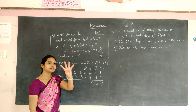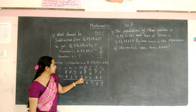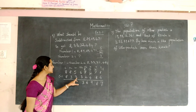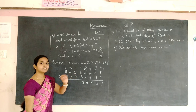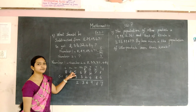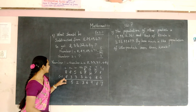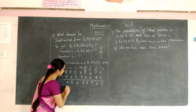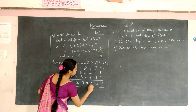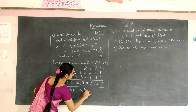Start counting from 2 until you reach 8: 3, 4, 5, 6, 7, 8 — number got is 6. Start counting from 3 until you reach 6: 4, 5, 6 — the number is 3. Start counting from 3 until you reach 8: 4, 5, 6, 7, 8 — the number is 5. And 8 minus 8 is 0. So the answer is 52,36,987.